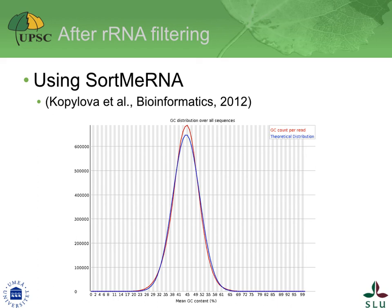As you can see from the GC% distribution, it now almost perfectly matches the theoretical distribution. Based on this whole process, it now appears that we have corrected for the bias observed in a meaningful way, and have reads that are now clean.